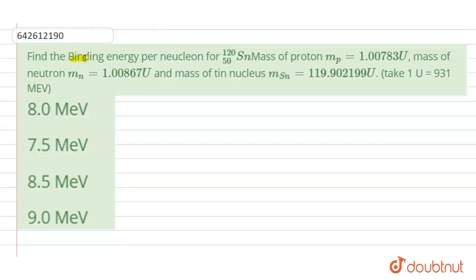Hello everyone, the question says to find the binding energy per nucleon for Sn, that is tin, having atomic number 50 and atomic mass 120. Mass of proton is 1.00780u, mass of neutron is 1.00867u, and mass of tin nucleus is 119.902199u. Take 1u equals to 931 mega electron volt.